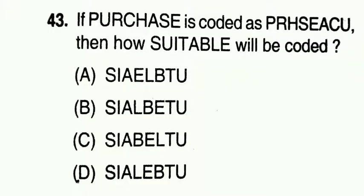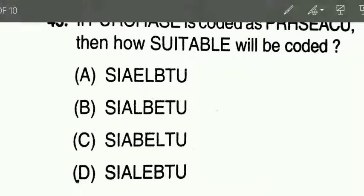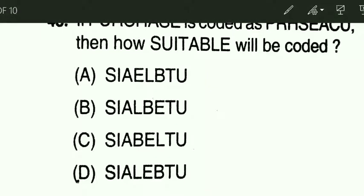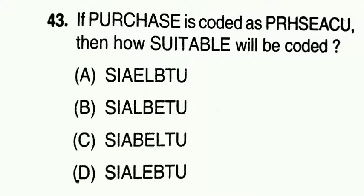Next question: if PURCHASE is coded as P, R, H, S, E, A, C, U, then how will SUITABLE be coded? This is a coding-decoding question. The alphabets in PURCHASE and in its coded form are the same; the arrangement is different. Let's see what kind of arrangement is used.